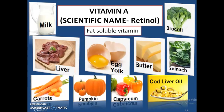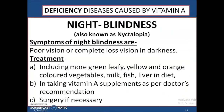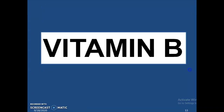Sources of vitamin A include milk, liver, carrots, pumpkin, egg yolk, capsicum, butter, cod liver oil, spinach, and broccoli. The deficiency disease caused by lack of vitamin A is night blindness, also known as nyctalopia. Symptoms include poor or complete loss of vision in darkness. Treatment includes eating more green leafy, yellow, and orange colored vegetables, milk, fish, and liver, taking vitamin A supplements as per a doctor's recommendation, and surgery if necessary.